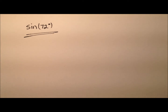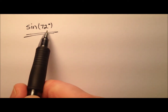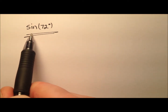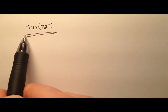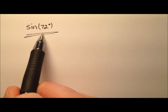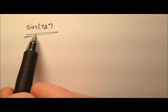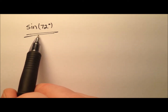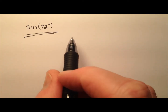In this video, I want to show you one way that we can find the exact value for the sine of 72 degrees. There are several ways to do this, including geometric and algebraic approaches. I'm going to take an algebraic approach in this video.